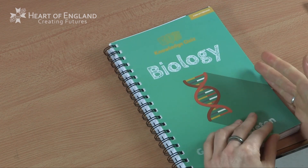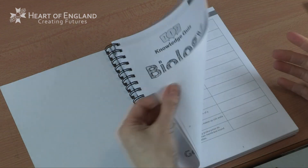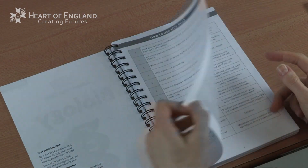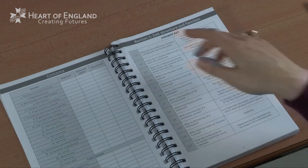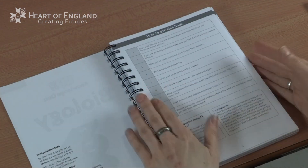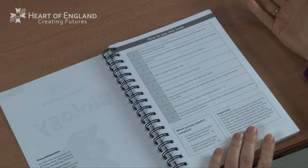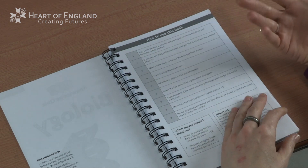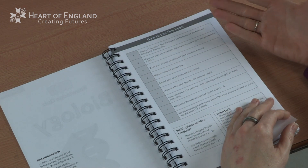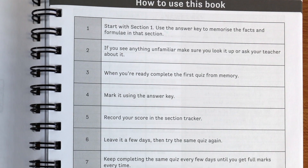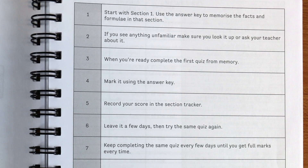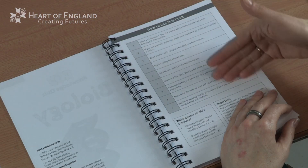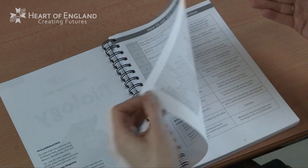All of the books have the same setup. Once you've got past the title page it tells you how to use this book. Then you turn over and it's got a contents page. It tells you how to use the section tracker, and I'm going to model for you how to use this book.